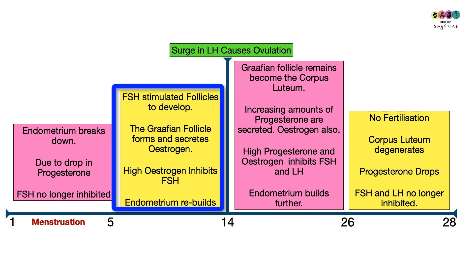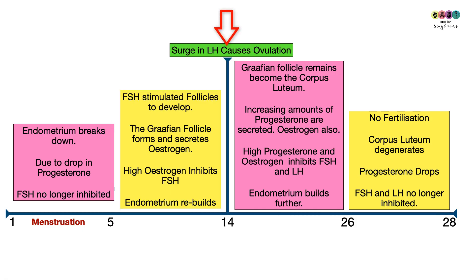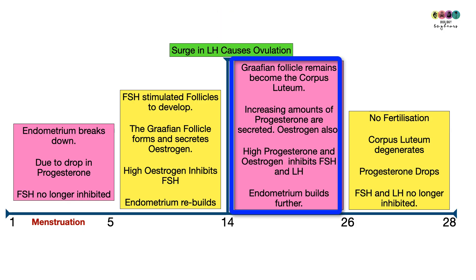Eventually the Graafian follicle forms and secretes estrogen. High levels of estrogen inhibit the production of Follicle Stimulating Hormone, and also stimulate the endometrium to rebuild. High estrogen levels also stimulate the production of Luteinizing Hormone by the pituitary gland, and a surge in LH causes ovulation on approximately day 14.